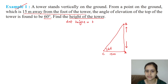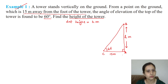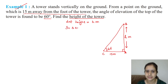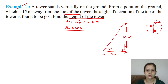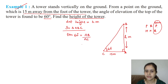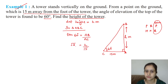Now we write the solution. First, let's assume the height of the tower is H meters. This is a right angle triangle. Since the tower is straight, angle A is 90 degrees. The elevation angle is 60 degrees. In triangle ABC, we know base and need perpendicular, so we use tan. Tan 60° = perpendicular AB divided by base AC, so tan 60° = H/15. Tan 60° = √3, therefore the height of the tower is 15√3 meters.